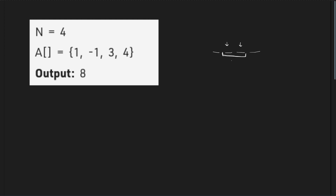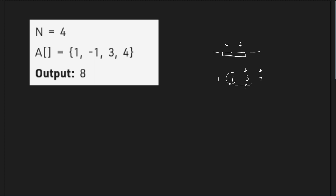For every two elements, I have to take at least one of them. When we have the elements 1, -1, 3, and 4, I can take element 1, take element 3, and since I have already taken element 3 for these two consecutive elements, I can safely ignore -1 and then take 4. So if I add 4 plus 3 plus 1, that equals 8 and that is our answer.